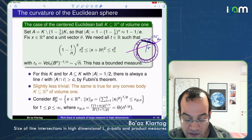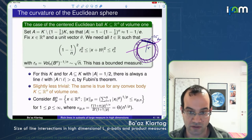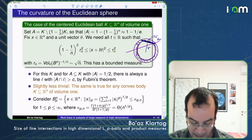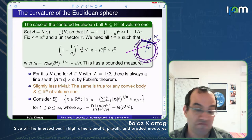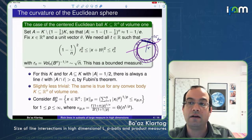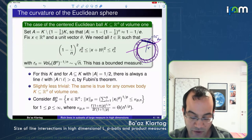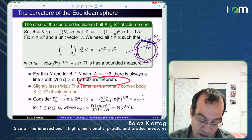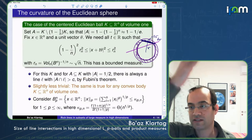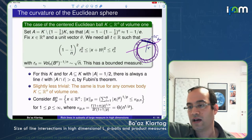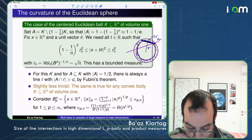For the Euclidean ball, the thin shell trivially eliminates all segments of super-constant size. Can you go below a constant? No — by Fubini's theorem, any subset of the Euclidean ball of measure 1/2 must have at least one line intersection above a constant. So this is sharp for the Euclidean ball.